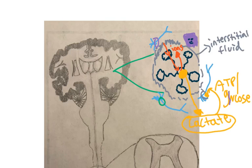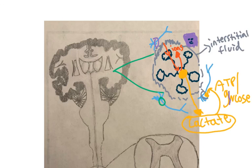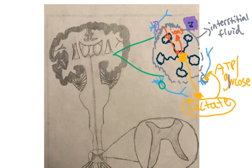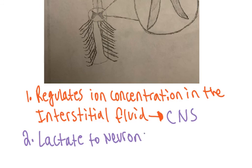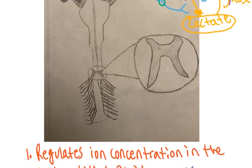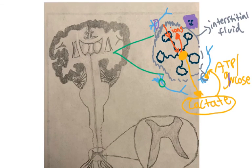In regular blood flow, there's also a constant supply of glucose transported through special GLUT receptors into neurons. Remember, neurons don't need insulin — they're insulin independent. So glucose can enter neurons directly. Those are the two most important jobs here: ion concentration regulation and lactate provision from astrocytes to neurons for ATP and glucose.